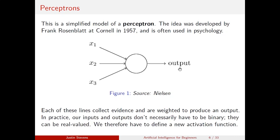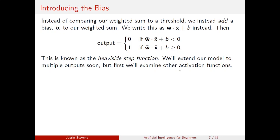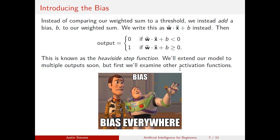In practice, our inputs and outputs don't necessarily have to be binary — in the past example everything was binary. We therefore need to define a new activation model. Instead of a threshold t, we're going to add a bias b to our weighted sum, written as weights dot input plus bias. The output is zero if this quantity is less than zero, and one if it's greater than or equal to zero. This is known as the Heaviside step function. We'll extend our model to multiple outputs soon, but first we'll examine some other possible activation functions. The bias helps account for randomness in our weights.